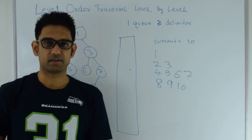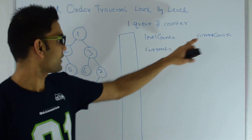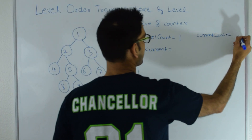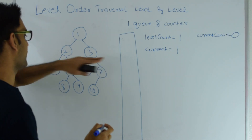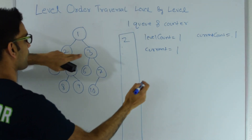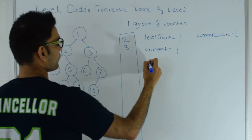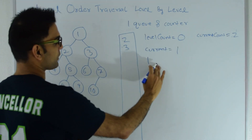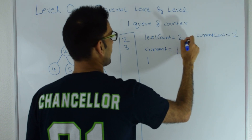Next let's look at one queue and a counter technique. My technique number 3 uses one queue and two counters: level count and current count. I put 1 into the queue. My level count is 1 and my current count is 0. I pop from the queue so current becomes 1. If current has a left child, I push that into the queue and increase current count by 1. Current also has a right child 3, so I push that into the queue and increment current count to 2. Then I print 1 and decrement level count by 1. As soon as level count becomes 0, I put a new line. Then I take current count, put that into level count, and make current count 0.